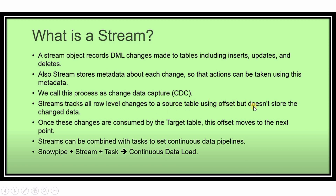Stream tracks changes using an offset. For example, if the current time is 10 AM and you made changes at 9 AM, you can use the offset (e.g., minus 60 * 60) to time travel and query the historical data from 60 minutes ago. We discussed offset, timestamp, and AT/BEFORE query in the time travel video.